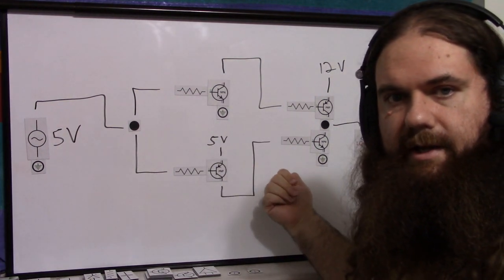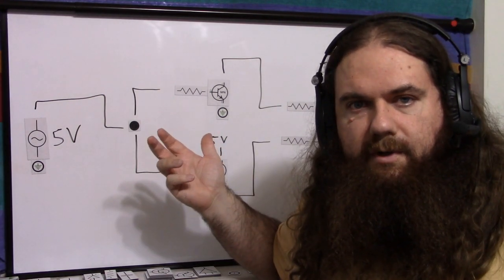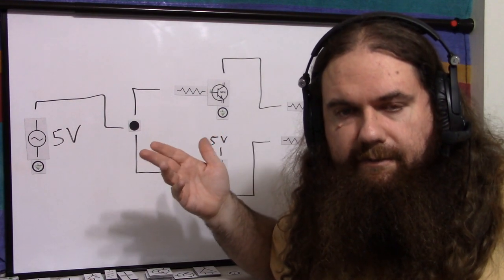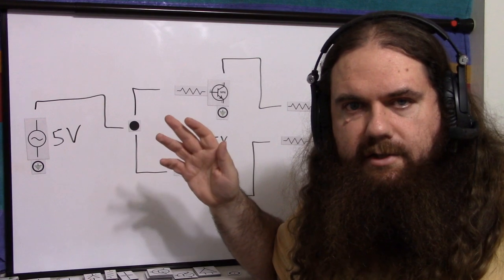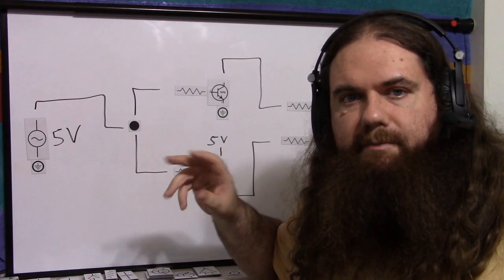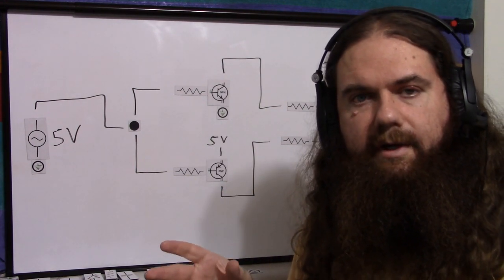Which technically means it has a floating input, since this is an open collector configuration. Almost always, from what I've found, it's not a problem to leave the base of a BJT floating. If you have any static discharge or induction or whatever, it might briefly turn it on, but the current is not sustained, and the BJT needs current to keep going, so it might blip briefly.